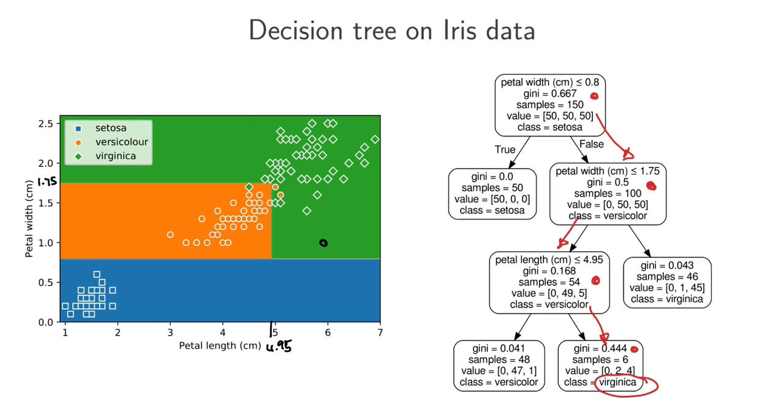First, we asked, is the petal width less than 0.8? So 0.8 petal width is a line running here. So this node right at the top, this node here, separates the input space into two regions. One at the bottom, where the petal width is less than 0.8, and one at the top, where the petal width is more than 0.8.